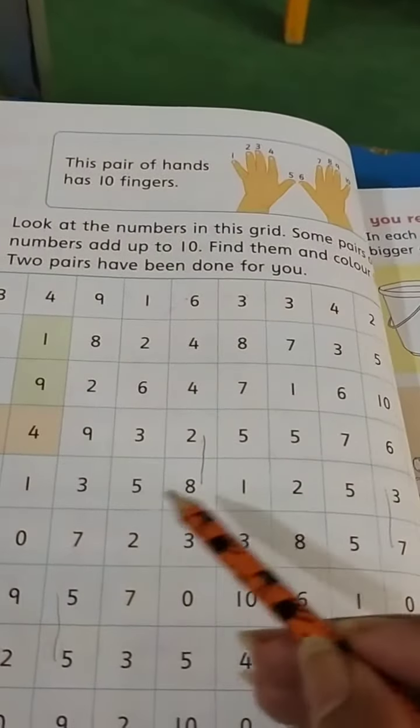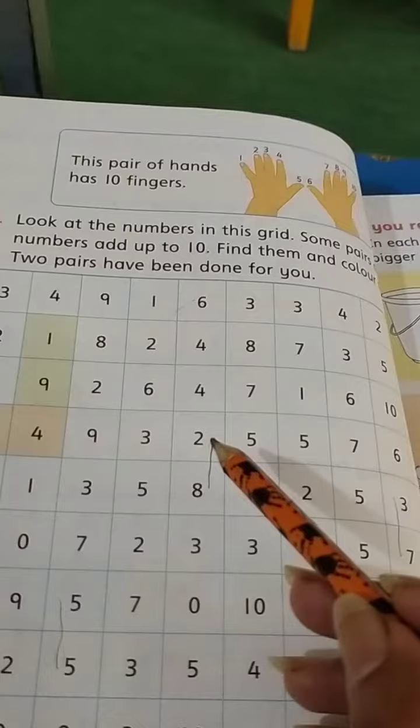We have to color it like this. As example is given to us. So we have to find other numbers.